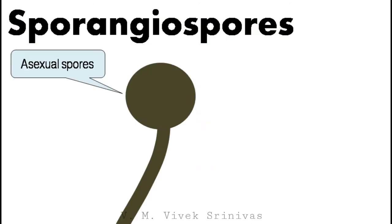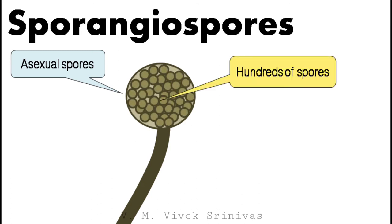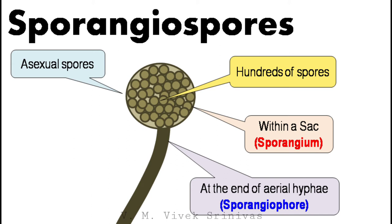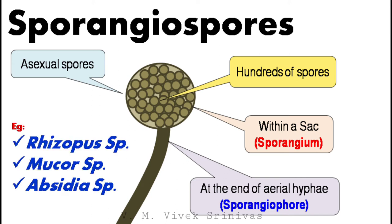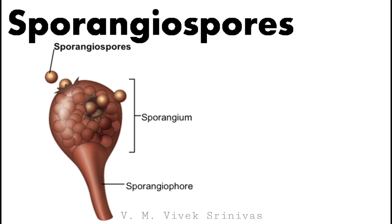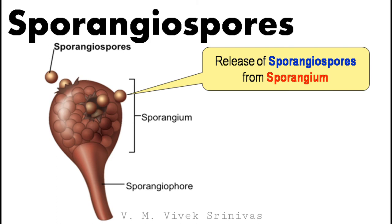Sporangiospores are asexual spores where hundreds of sporangiospores are produced within a sac called sporangium. This sporangium encases these spores at the end of aerial hyphae called sporangiophore. Rhizopus, Mucor, and Absidia are examples of fungi which produce this type of asexual spore. Hundreds and thousands of sporangiospores are produced within the sporangium. These spores are released from the sporangium and develop into individual hyphae.